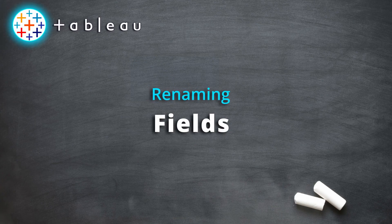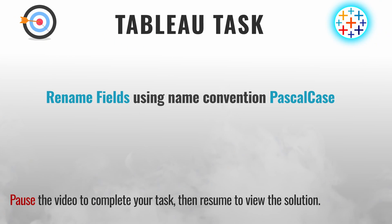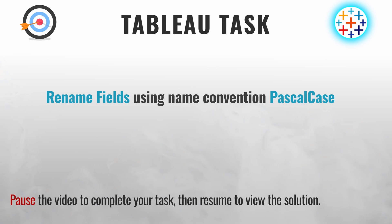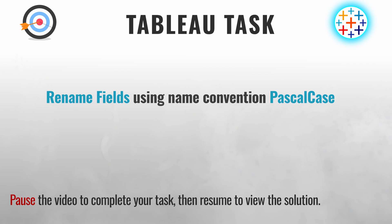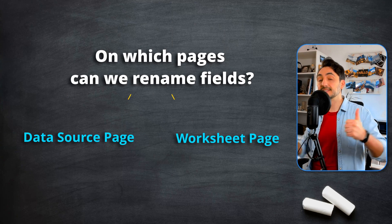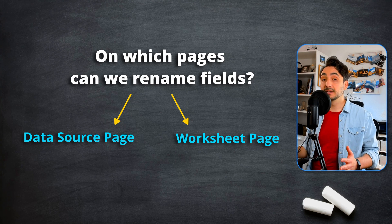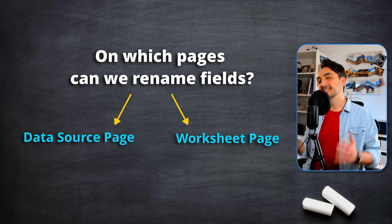Now we're going to learn how to rename fields in Tableau. The task is to rename our fields following the naming convention Pascal Case, so that means all the words are capitalized and no separation between words. The first question is on which page we can rename our fields — we can rename them either in the worksheet page or in the data source page. We'll get the same effect, but I usually go to the data source page since there we can find more metadata information about the fields and tables.